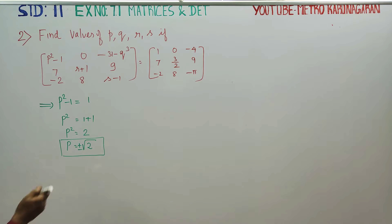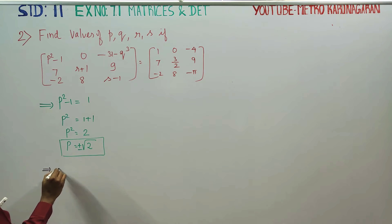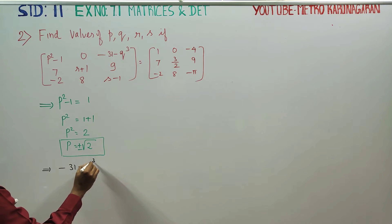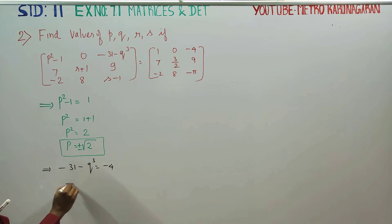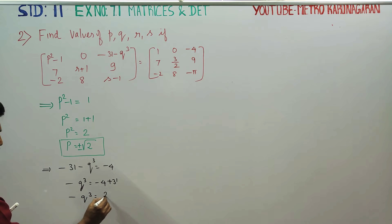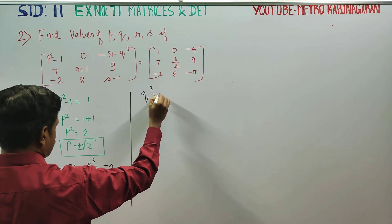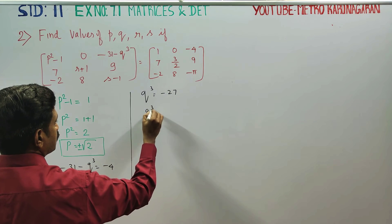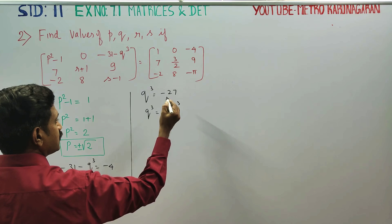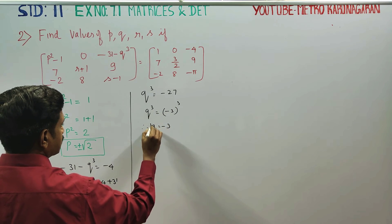This is the third element. Third element implies minus 31 minus Q cubed is equal to minus 4. Minus Q cubed is equal to minus 4 plus 31. Minus Q cubed is equal to plus 27. Q cubed is equal to minus 27. Q cubed minus 27 can be written as minus 3 whole cube. Power same, base same. Therefore Q is equal to minus 3. This is the second result.